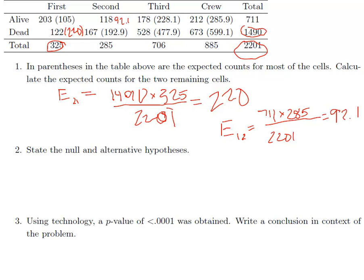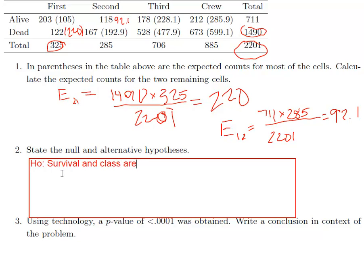The null and alternatives are actually pretty easy for this because we're getting away from the symbols. It's just easier to write this one out as a sentence. So the null is always just that the two variables are independent. So H naught will say survival and class are independent. That means whether or not you survived is not related to what class you're from on the Titanic. And then the alternative is simply that they're dependent. So we can just write survival and class are dependent. So whether or not you survive depends at least in some sense on what class you're from. If you know what class you're from that influences your chance of survival.